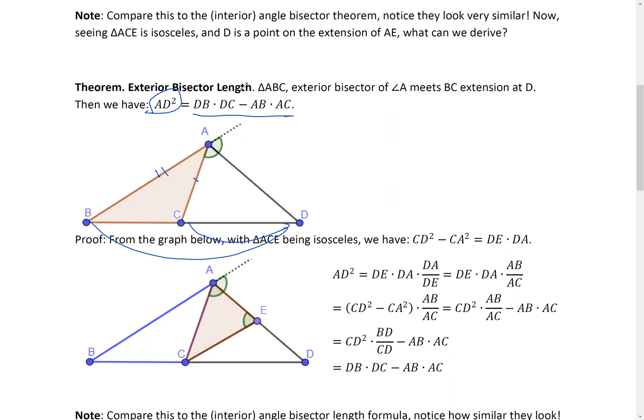Now let's prove it, right? Isosceles triangle, no? This is isosceles. And D is on the extension of AE. So immediately, let's apply our little theorem, which says CD square minus AC square should equal to DE times DA. Okay? Correct? Try to remember your theorem. All right? Don't forget.